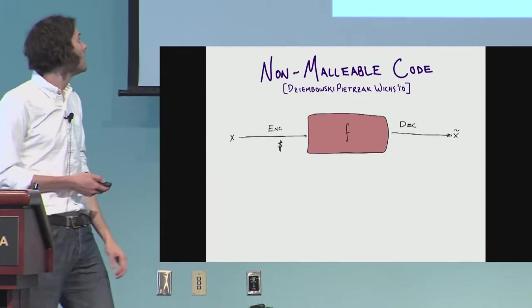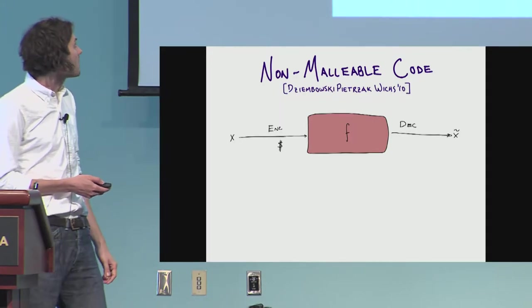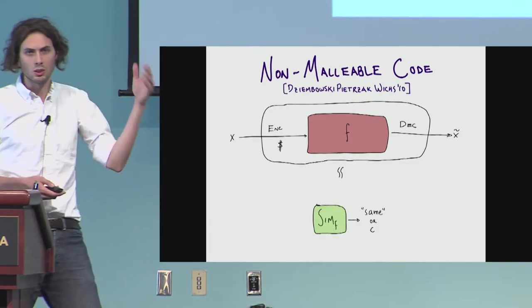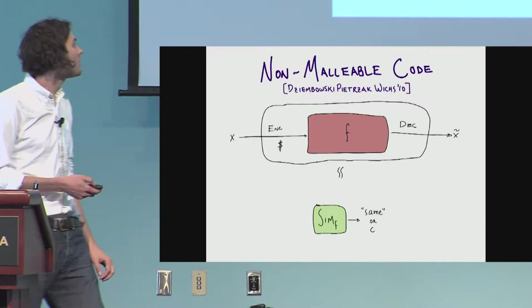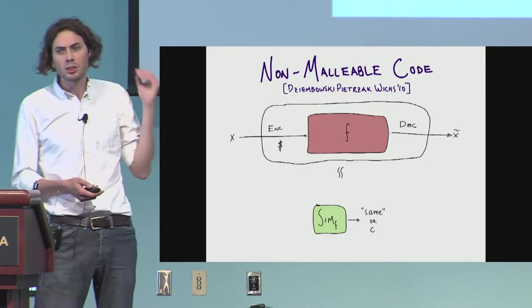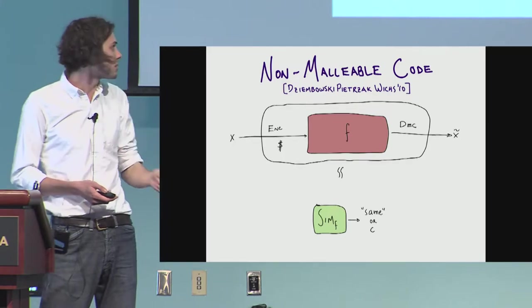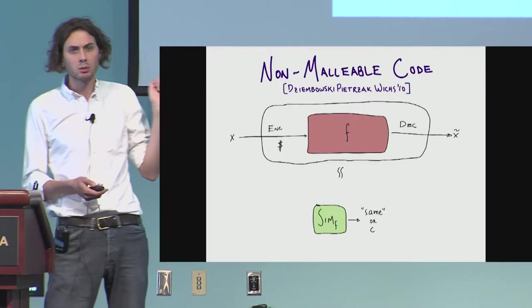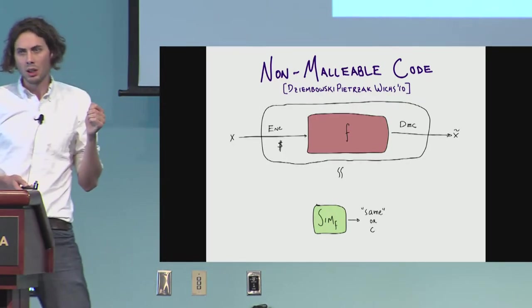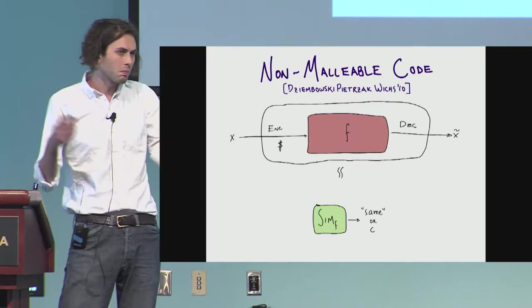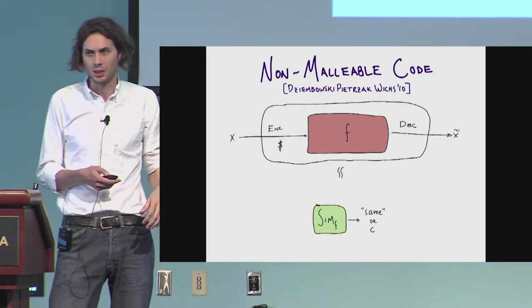Let's formalize this a bit. We have the same experiment. How could we formalize this notion of unrelatedness? Imagine we have a simulator and the simulator is going to depend only on the tampering function. It's going to flip some coins and it's going to either output a special symbol same or some random message C.